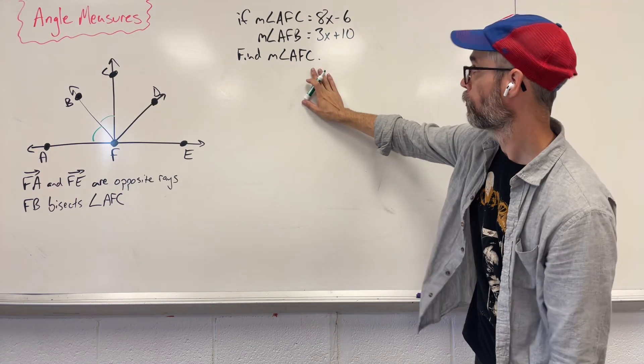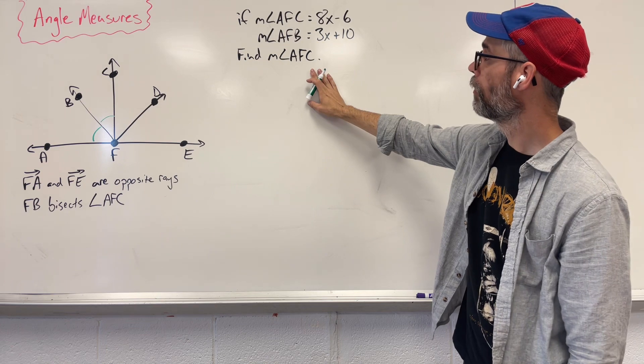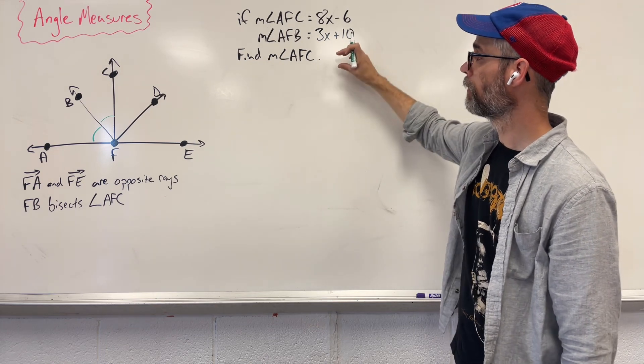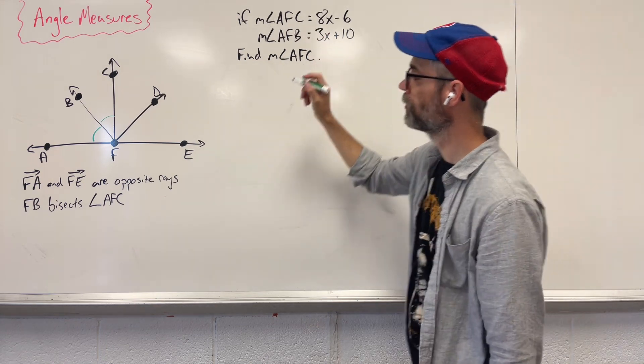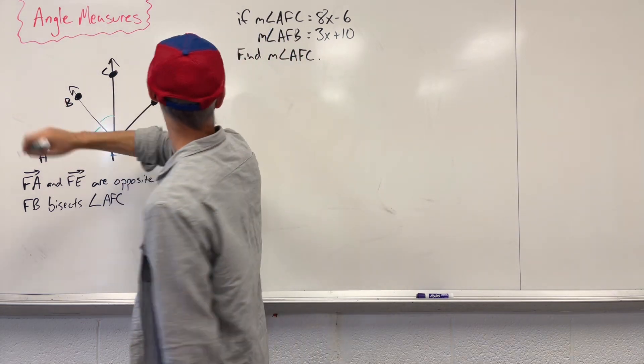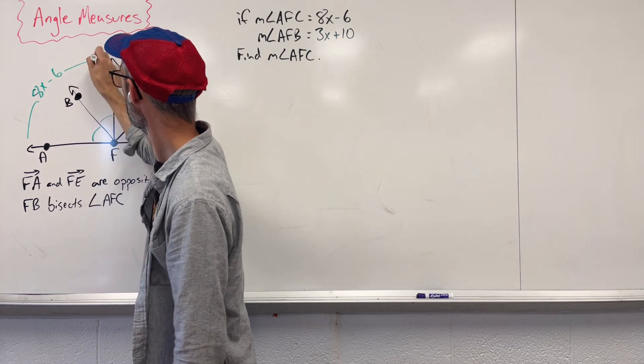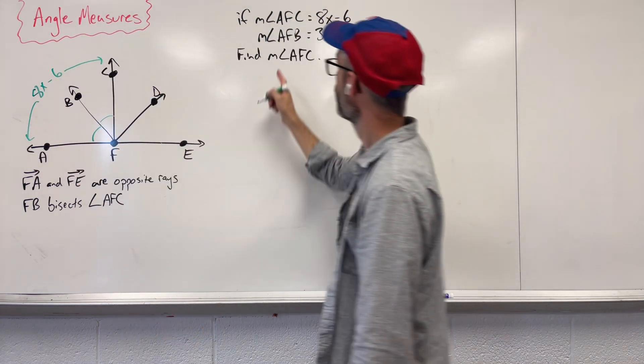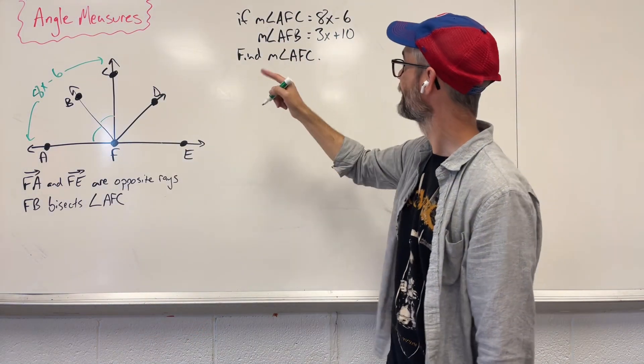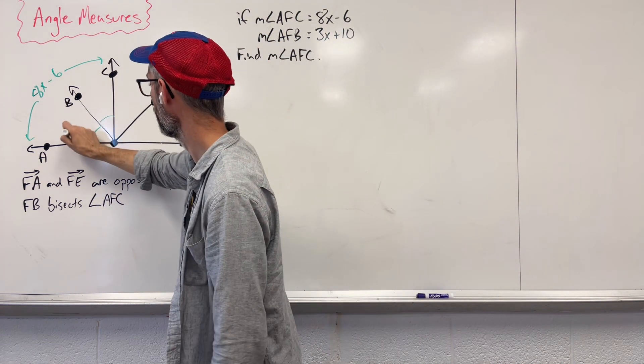Now going to the problem. We're given some information and we need to find something. We know that angle AFC, this big angle, is 8X minus 6. We also know that angle AFB inside that is 3X plus 10.